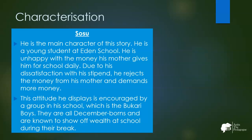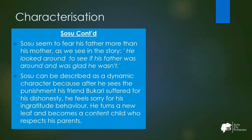In terms of characterization, Sosu is the main character of the story. He is a young student at Eden School who is unhappy with the money his mother gives him daily. Due to his dissatisfaction with his stipend, he rejects the money and demands more. This attitude is encouraged by the Bukhari Boys, a group known to show off wealth at school during their break. Sosu seemed to fear his father more than his mother — when he wanted to reject the money, he quickly looked around to see if his father was nearby and was glad he wasn't.